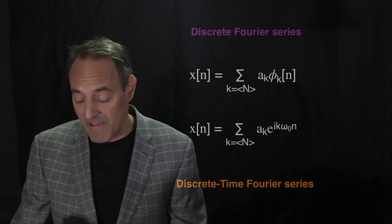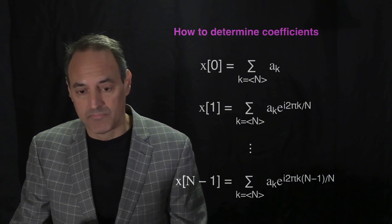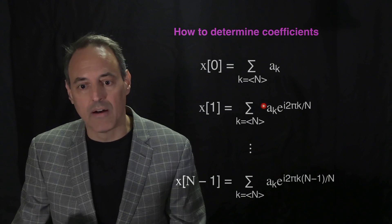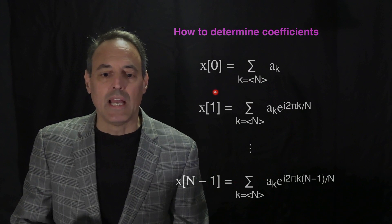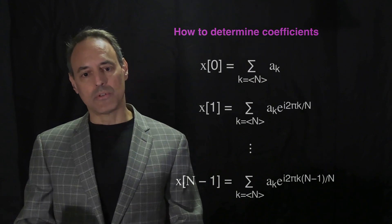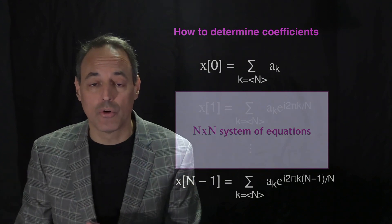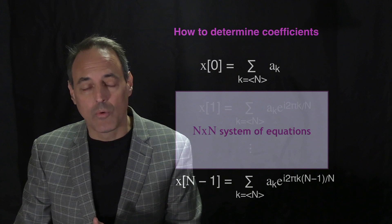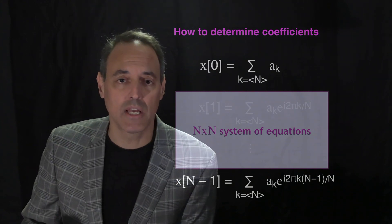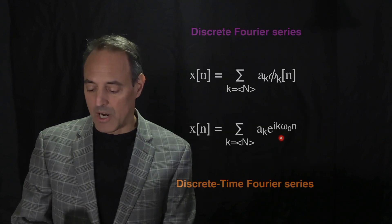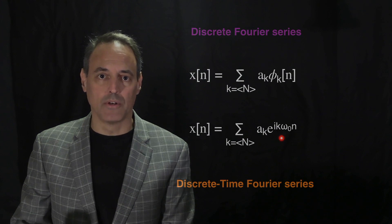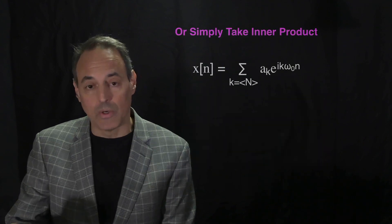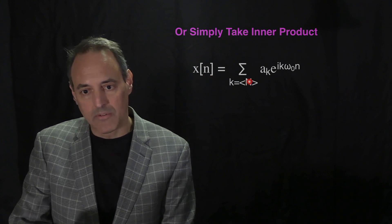One way to find the coefficients is to plug in values directly. Setting n = 0 gives a(0); n = 1, 2, ... , N-1 each give an equation. This produces N equations in N unknowns — a(0), a(1), ..., a(N-1) — which can be solved as an N×N system. However, there's a quicker and more elegant way: the same orthogonality approach used in the continuous case, since these building blocks are orthogonal to each other.